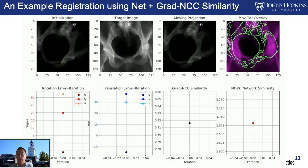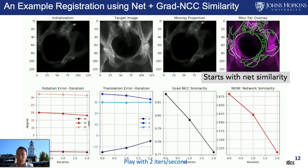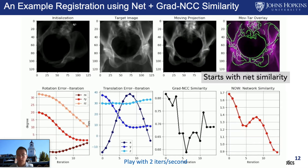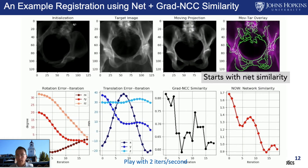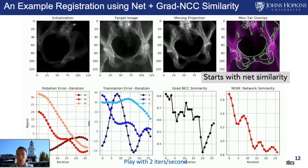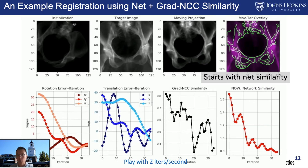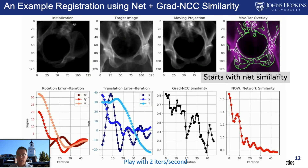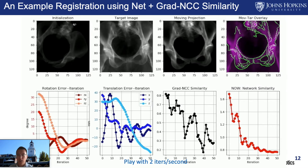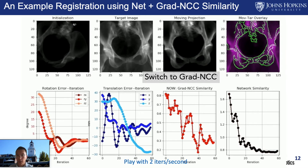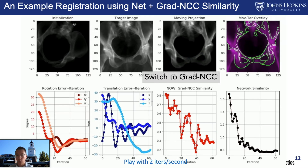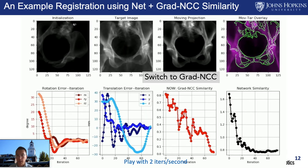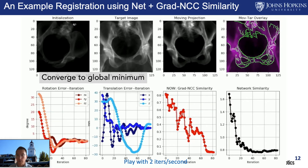We show the same registration but starting with the network similarity. You can see that it tries to pull the volume in 3D space to be close to the global optimum. Once it gets closer, we switch to the traditional gradient NCC loss to do a local adjustment until it fully converges.